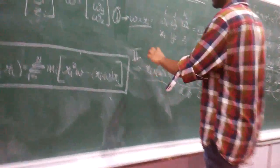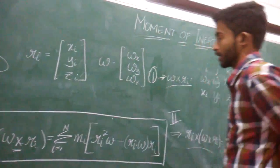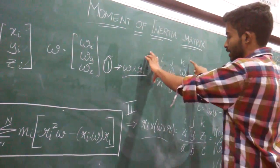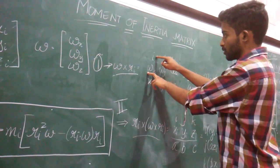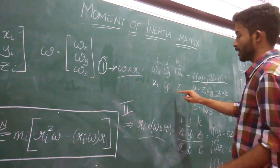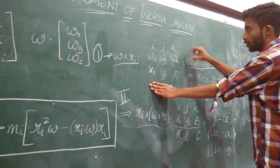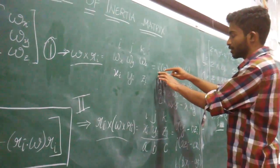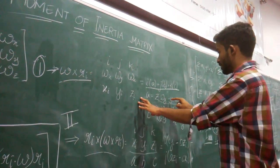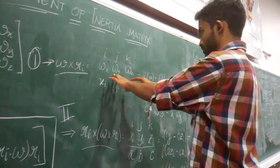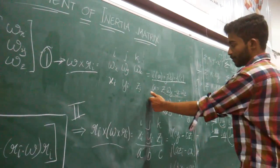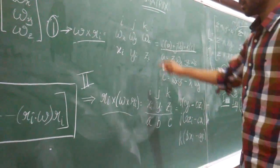Now let us evaluate ω × r_a. The cross product can be written as a matrix determinant with rows (i, j, k), (ω_x, ω_y, ω_z), and (x_i, y_i, z_i). This gives i·a + j·b + k·c, where a = z_i·ω_y - y_i·ω_z, and similarly for b and c. This is just a transformation of the matrix into linear form.